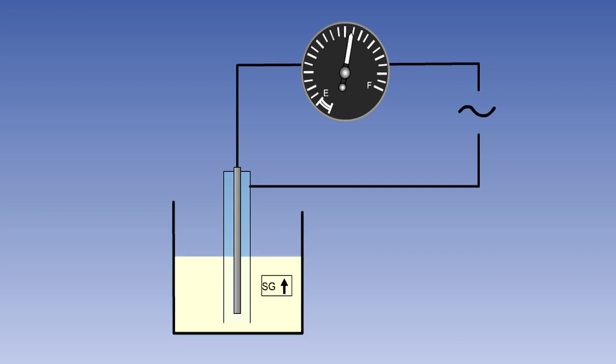The dielectric constant of fuel changes when its specific gravity changes. If the specific gravity of the fuel increases, more current will be allowed to flow in the circuit. And similarly, if the specific gravity decreases, the current flow will decrease.